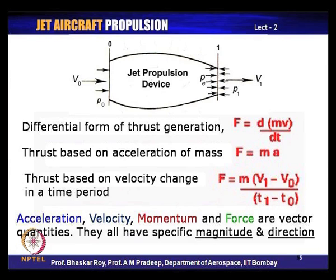The working medium — air — takes a finite amount of time to get inside and then exit the propulsive system. Within this time from t₀ to t₁, the velocity changes from v₀ to v₁. This change in velocity of the mass of air over the time period from t₀ to t₁ represents the acceleration of the entire mass of air, or the change of momentum. So the change of velocity in a given change of time is equated to thrust generation.